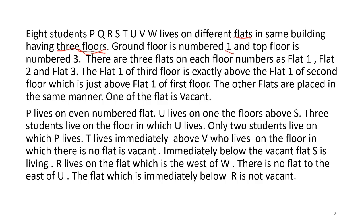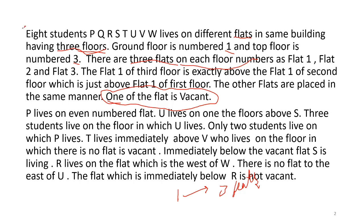Ground floor is number one and top floor is number three. There are three flats on each floor, numbered flat one, flat two, and flat three. Flat one of the third floor is exactly above flat one of the first floor, and the other flats are placed in the same manner. One of the flats is vacant.